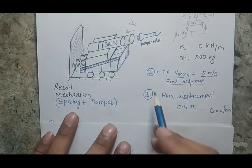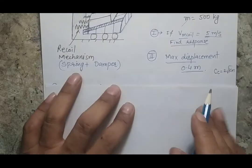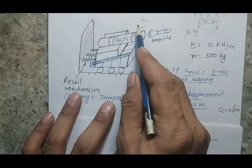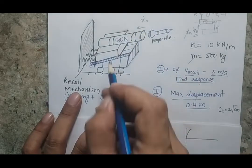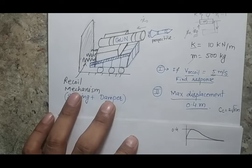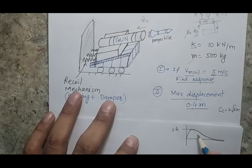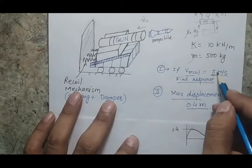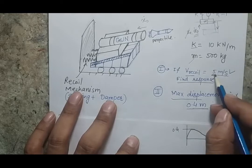The second case states that if there is some back motion, the maximum displacement is 0.4 meters. If I look at the response, due to the initial velocity the system will move in the backward direction, reach a maximum of 0.4 meters, and then come back to the original position. The question asks: if the maximum displacement is 0.4 meters, what would be the response? These are two independent cases — in the first case initial velocity is given, and in the second case initial velocity is not given.